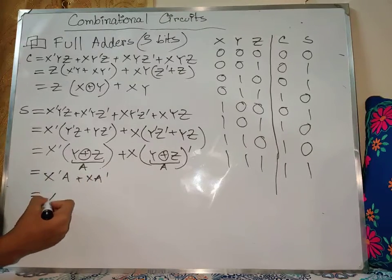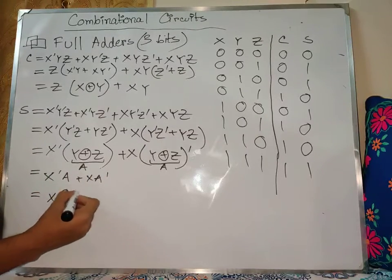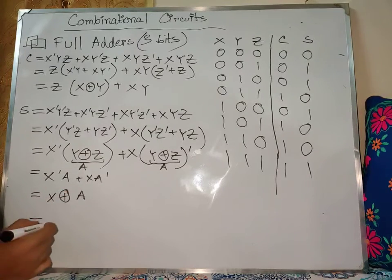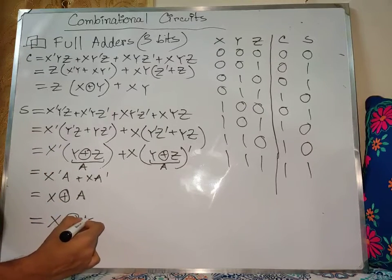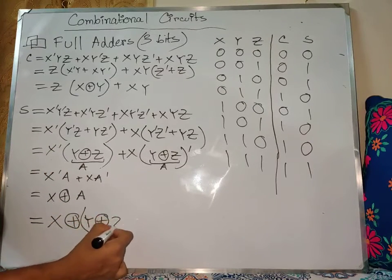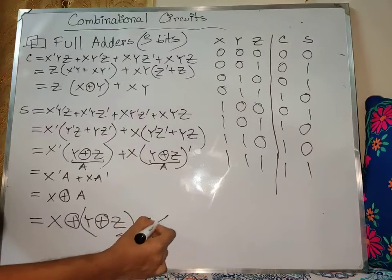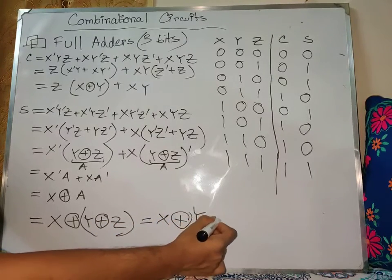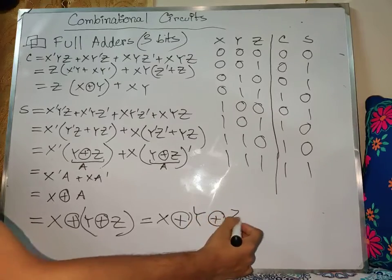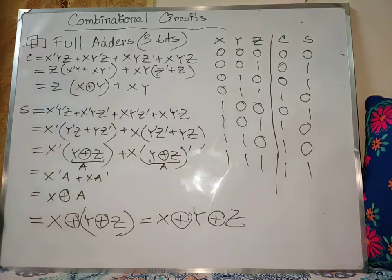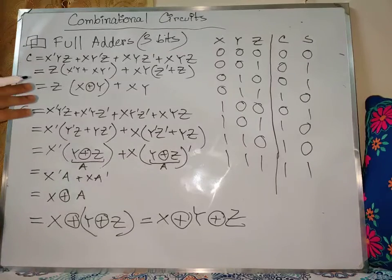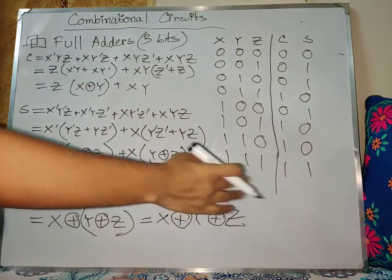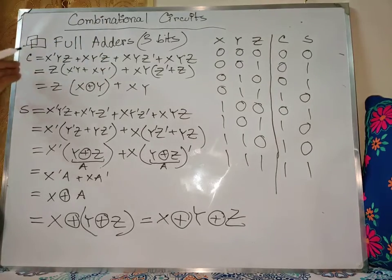So we have to do x OR a, ultimately using y, x OR z — and finally x OR y, x OR z. That's it. So from the CR and SR functions we can achieve the full adder circuit.